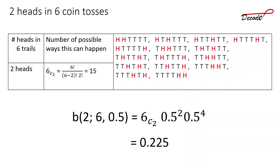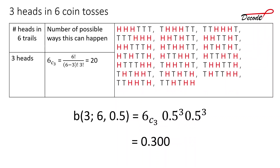For 2 heads in 6 coin tosses, there are 15 possible ways, all listed in the slide. Using 6_C_2 = 15, the probability is 15 × 0.5^2 × 0.5^4, which is 0.225. For 3 heads in 6 coin tosses, there are 20 ways — 6_C_3 = 20 — and the probability is 20 × 0.5^3 × 0.5^3, which turns out to be 0.300.